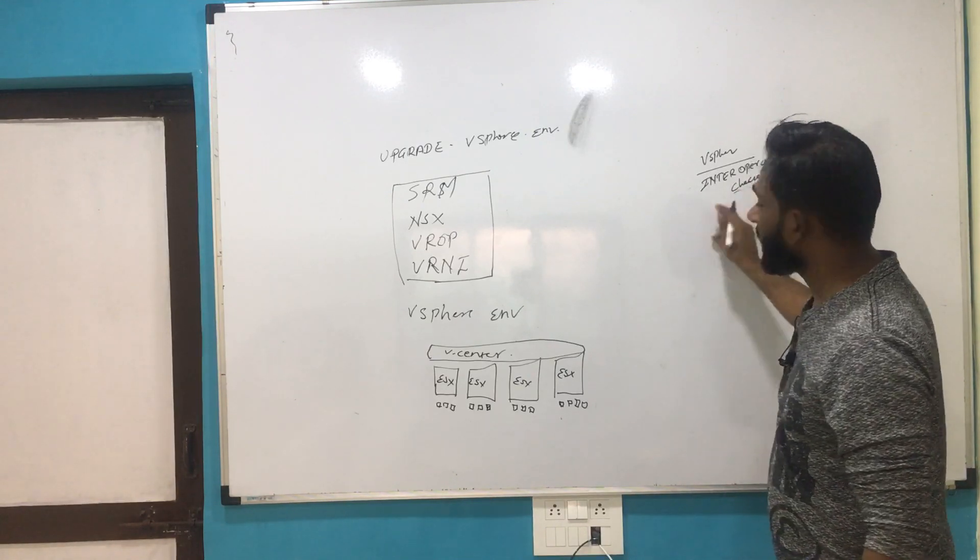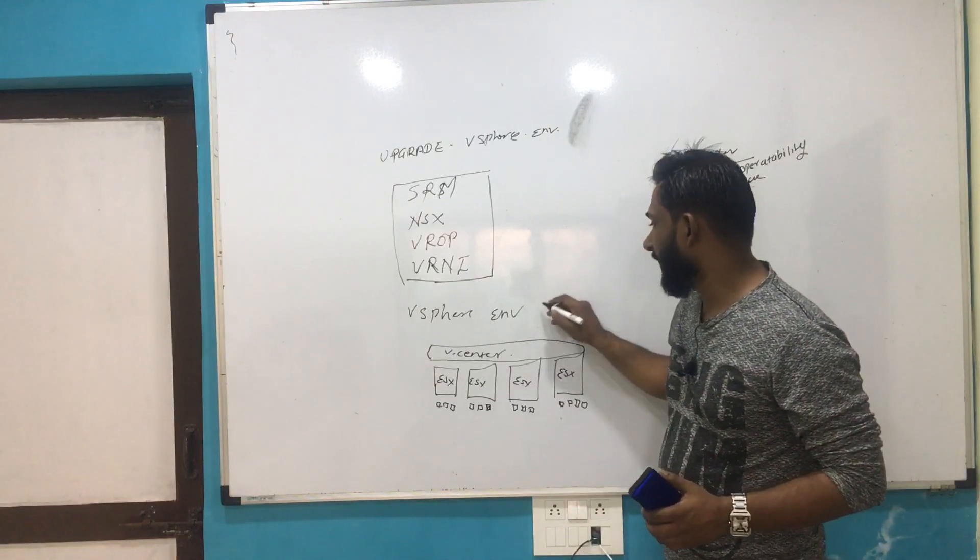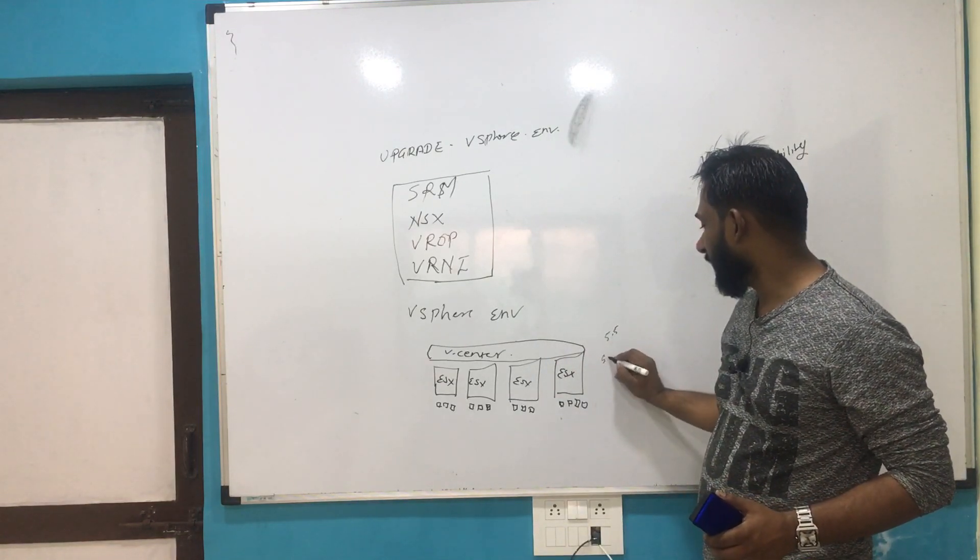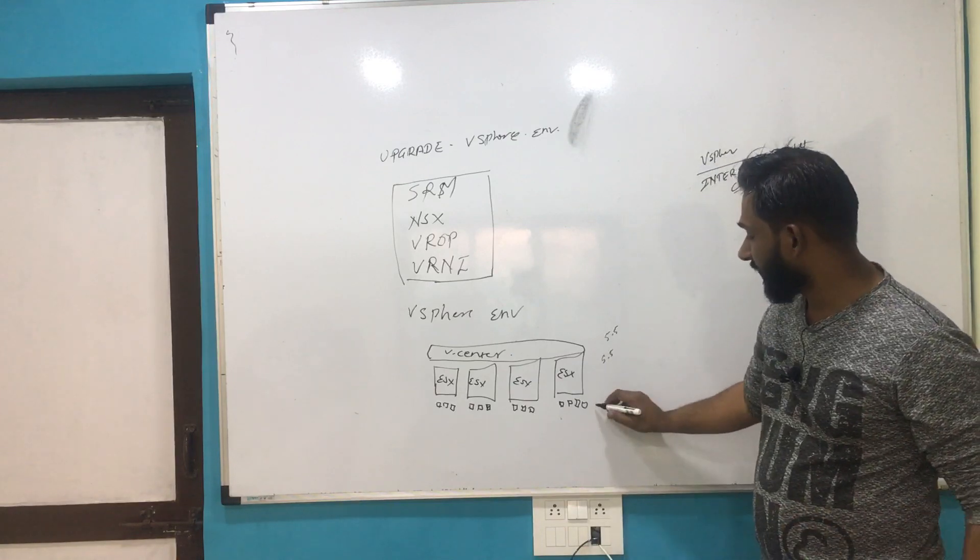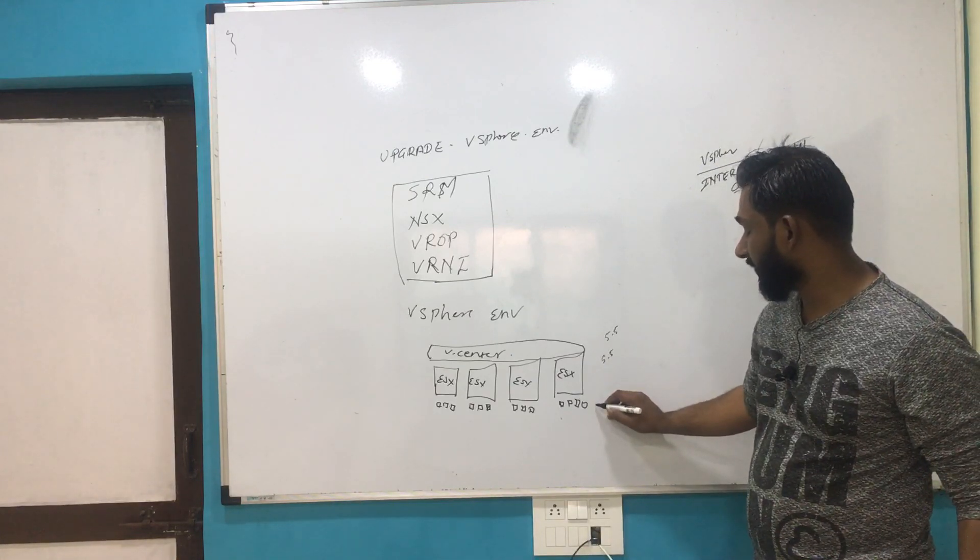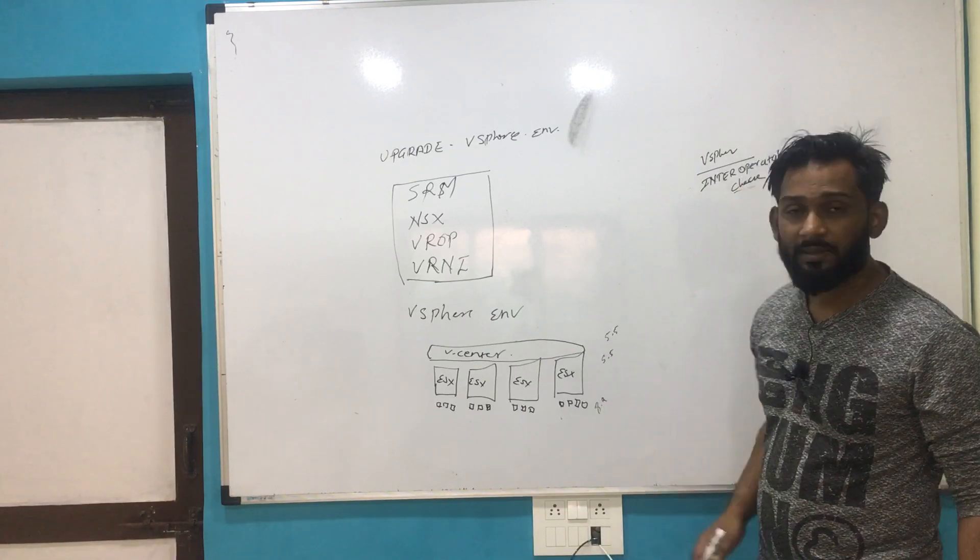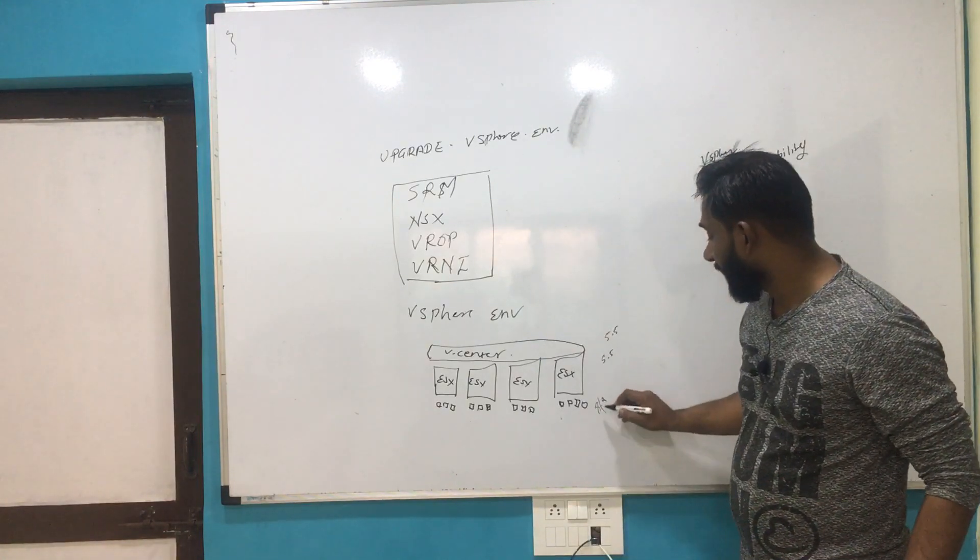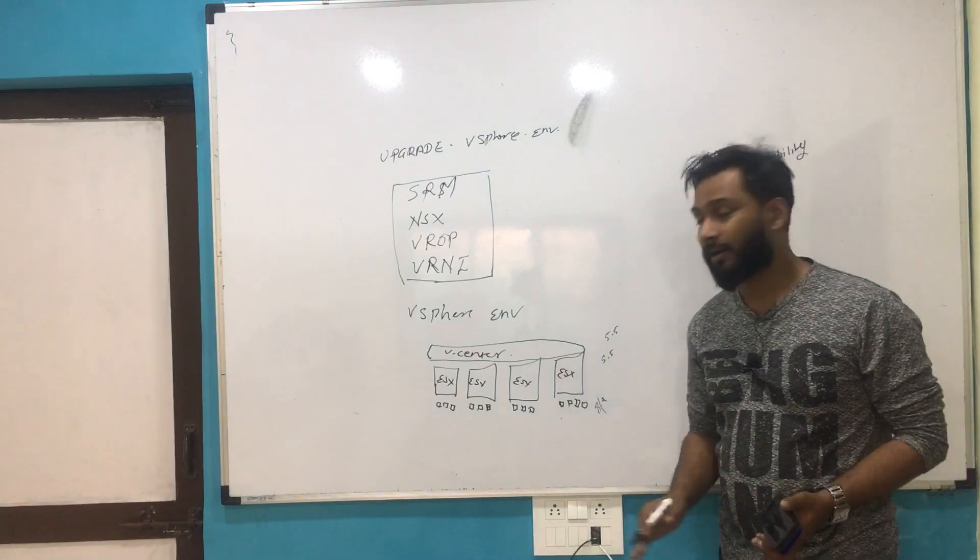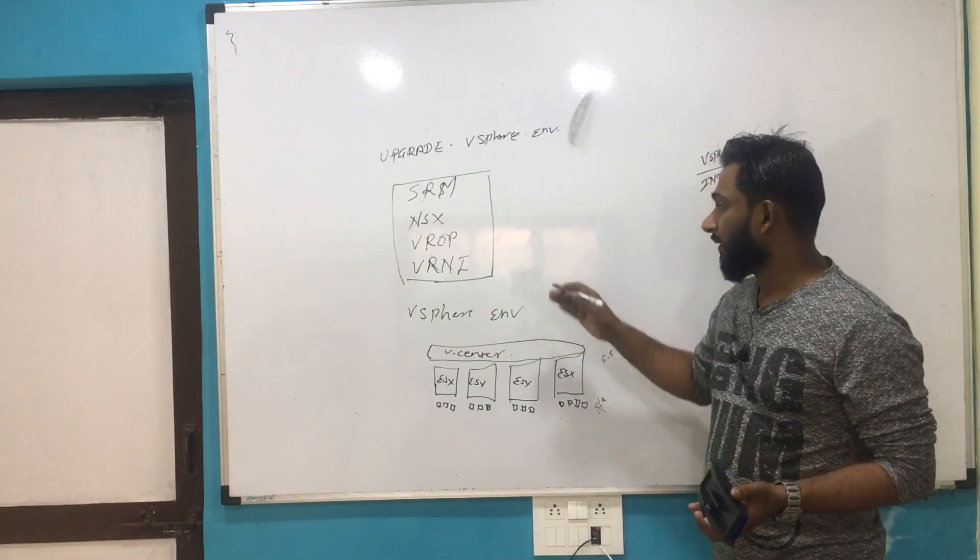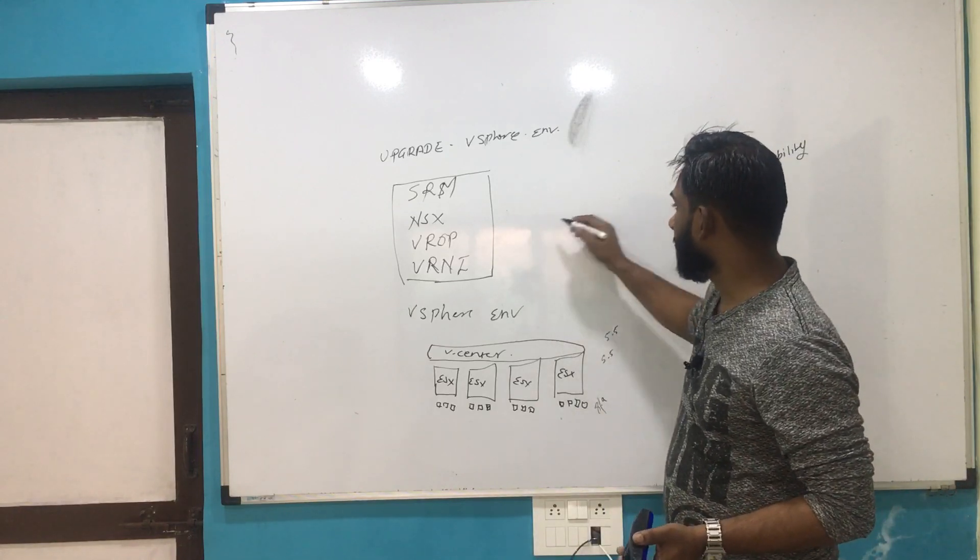What is interoperability check? That means if you have vSphere vCenter Server 5.5 and ESXi on 5.5, and VMs which are running hardware version, just assume they are on 8 or 9. These are compatible hardware for virtual machines and vCenter.